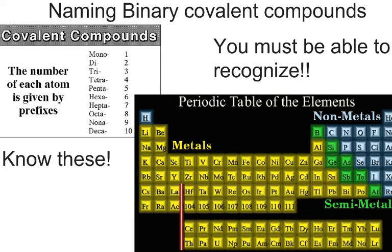In order to name binary covalent compounds, we first have to be able to recognize what they're made of. Binary covalent compounds are made up of two things, obviously from the name 'bi', and they're only made up of non-metals.